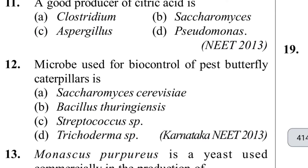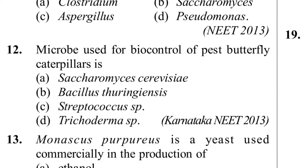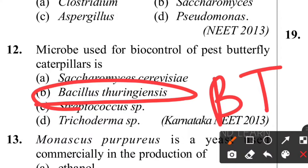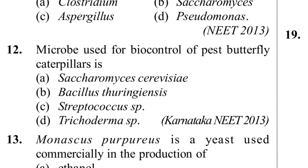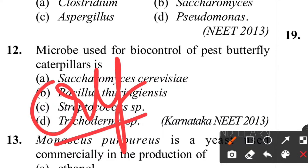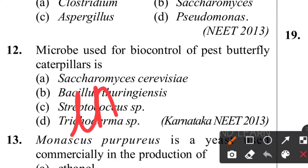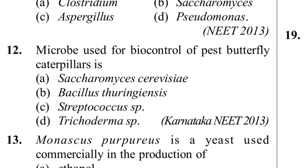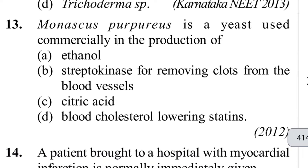Twelfth question: which microbe is used for biocontrol of pest butterfly caterpillar? The answer is option B - Bacillus thuringiensis (Bt). It is a type of bacteria containing a protein called Cry protein (CRY). This Cry protein has insecticidal properties, giving resistance against pest butterfly caterpillars.